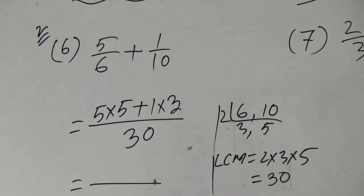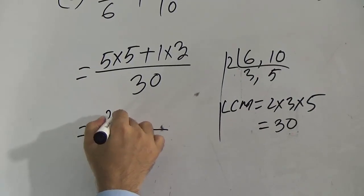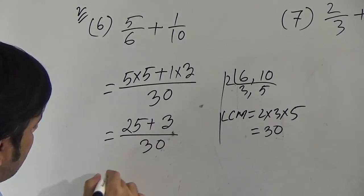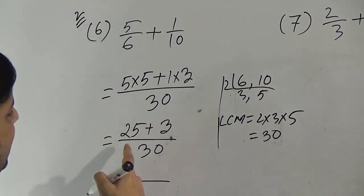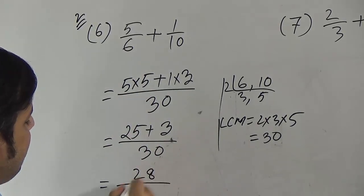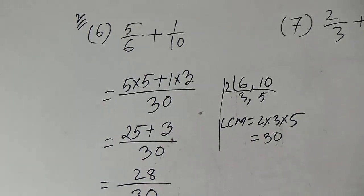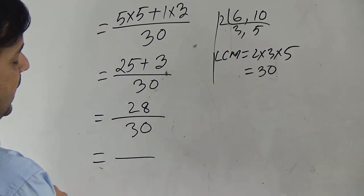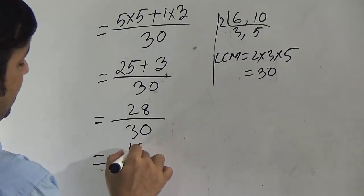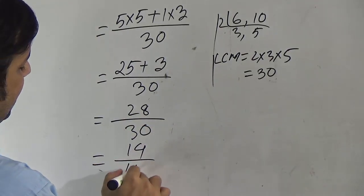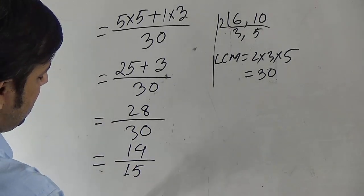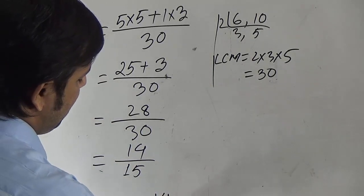Product of 5 and 5 is 25, and product of 1 and 3 is 3, over 30. Now add 25 and 3 to get 28/30. Both numbers are even, so we can simplify: divide 28 by 2 to get 14, and divide 30 by 2 to get 15. Now 14 and 15 cannot be divided further, so this is the lowest term. Our required answer is 14/15.